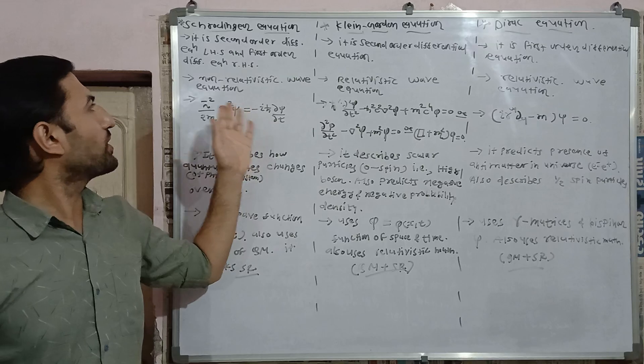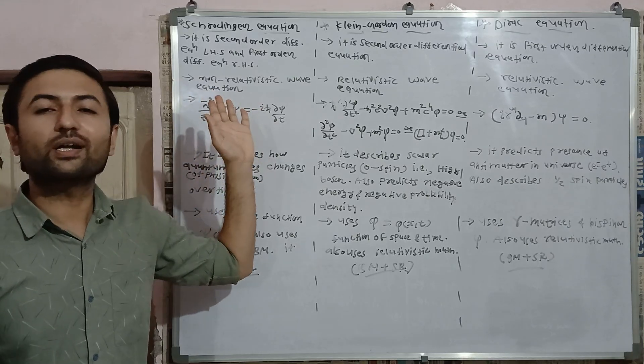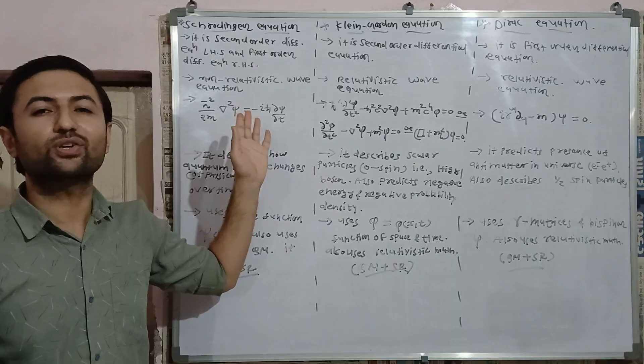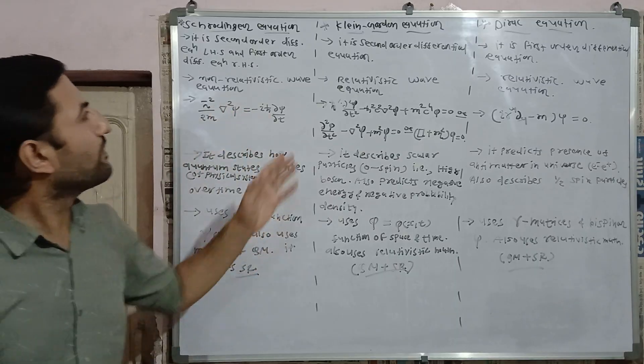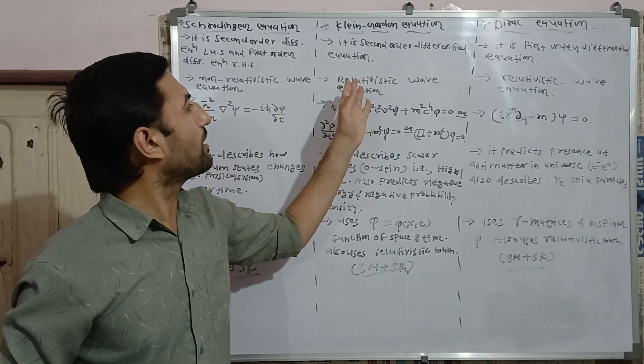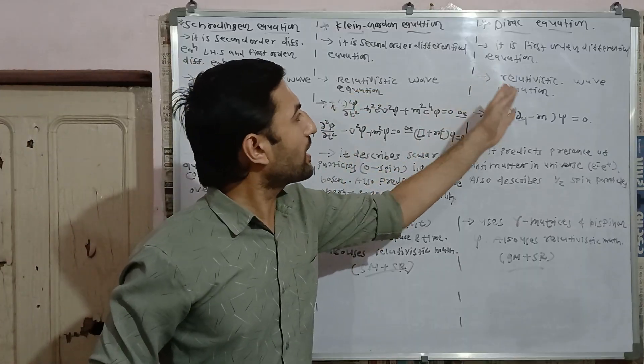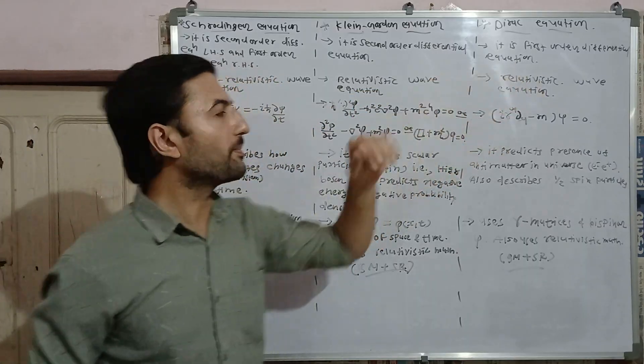Schrodinger equation is non-relativistic wave equation as it cannot incorporate special theory of relativity. While Klein-Gordon equation is completely relativistic wave equation as Dirac equation is also relativistic wave equation.